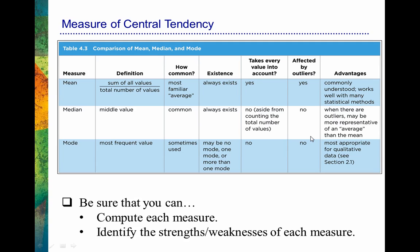Of course, we described our data initially using central tendency — one of the three measures of central tendency like the mean, the median, and the mode. This particular table does a great job of discussing the good points and bad points of using the mean, the median, or the mode — the advantages, disadvantages, and definitions of them. It's a very helpful table.